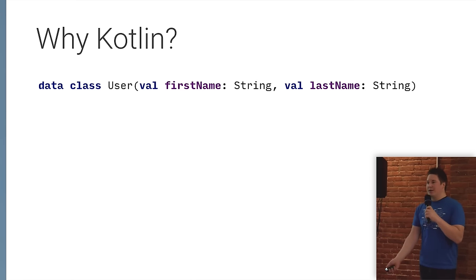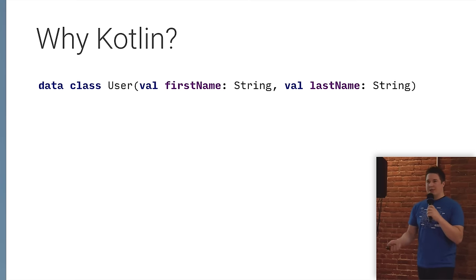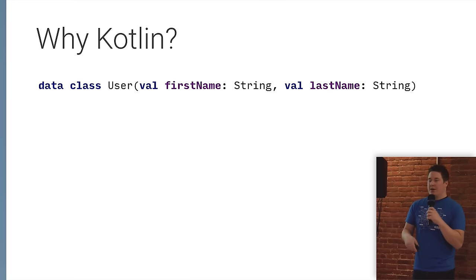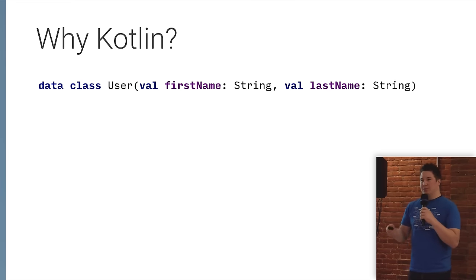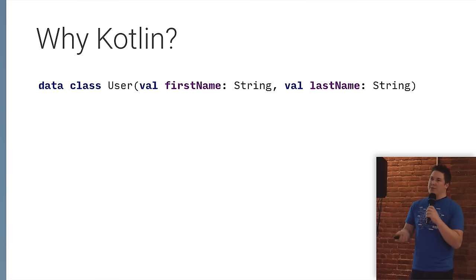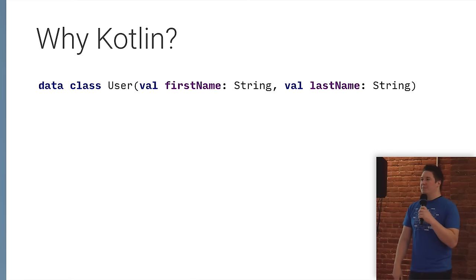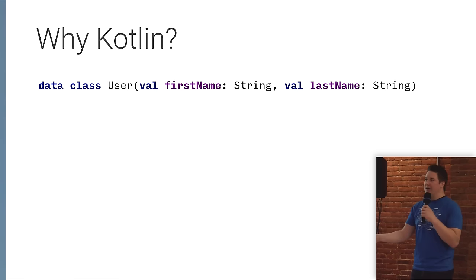There's something called data classes. Data classes are similar to AutoValue or Immutables — just a class that has read-only properties. It automatically gives you methods like equals, toString, and hashCode. And in Kotlin you get a copy method, which allows you to change single properties without referring to all the others. So you can change just the first name without having to pass along the last name.